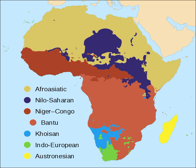The Niger-Congo languages constitute the largest language family spoken in Africa and perhaps the world in terms of the number of languages. One of its salient features is an elaborate noun class system with grammatical concord. A large majority of languages of this family are tonal, such as Yoruba, Igbo, Ashanti and Ewe. A major branch of Niger-Congo languages is the Bantu phylum, which has a wider speech area than the rest of the family.